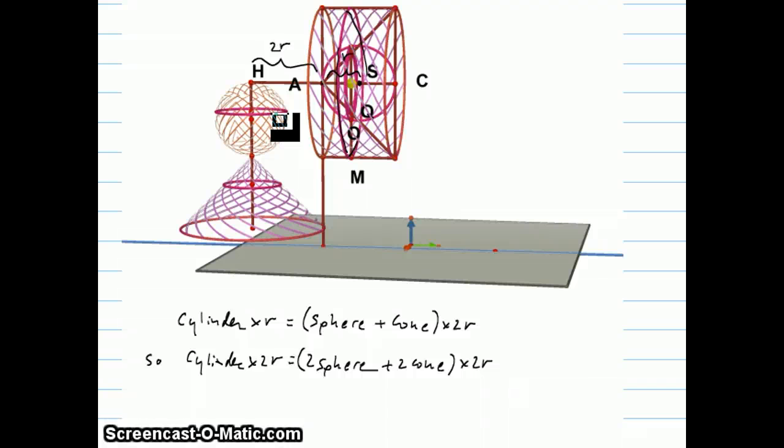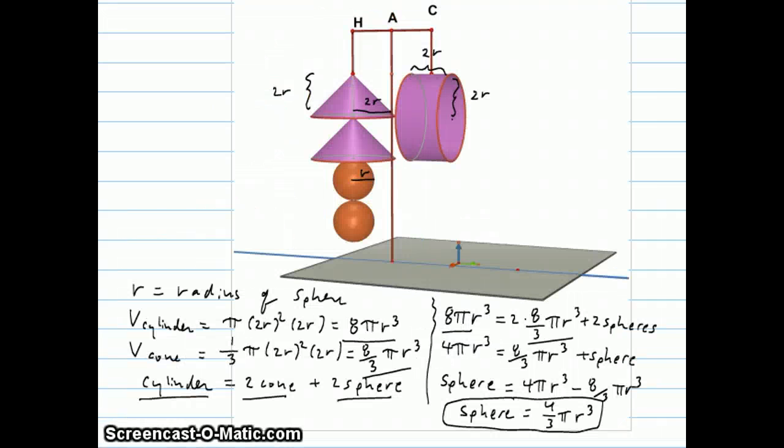Now the center of gravity of the entire cylinder is just the center of the cylinder itself, which is a distance of R, radius, from A. The center of gravity of the sphere and the cylinder, each of the circles individually has its center of gravity at H, so so does the entire thing. So this tells us the cylinder times the radius is the sphere plus the cone times two times the radius. That's AH here. And that means that if I move the cylinder over so that it's two times the radius, well, it would balance out two spheres and two cones, which is what we have right here.